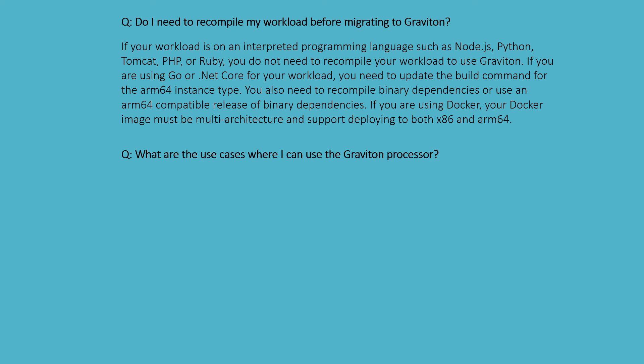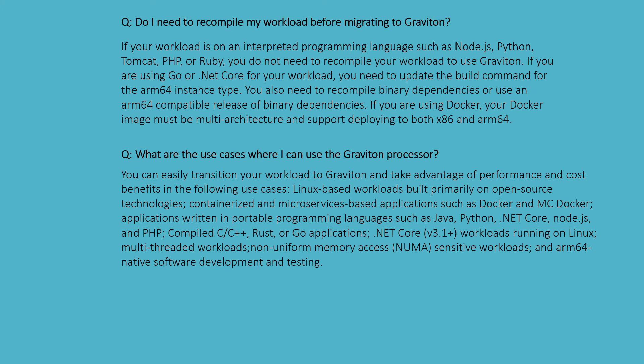What are the use cases where I can use the Graviton processor? You can easily transition your workload to Graviton and take advantage of its performance and cost benefits in the following use cases: Linux-based workloads built primarily on open-source technology, containerized and microservices-based applications such as Docker, portable programming languages such as Java, Python, .NET Core, and Node.js, Go applications, workloads running on Linux, multi-threaded workloads, non-uniform memory access sensitive workloads, and ARM64 native software development and testing.